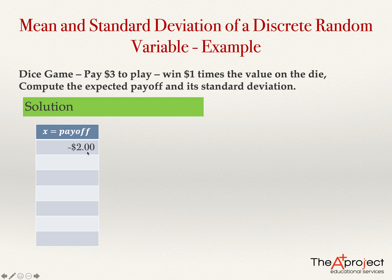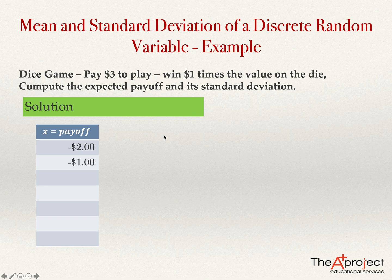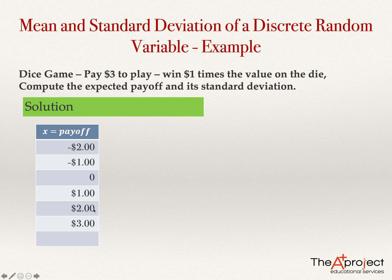One possible value of the payoff is minus two. That happens when you obtain number one on the die — you get one dollar but paid three, so one minus three equals negative two. Another payoff is negative one when you get number two (two minus three). You break even at zero when you get three. The payoff is one dollar when you get four (four minus three), two dollars when you get five, or three dollars when you get six.